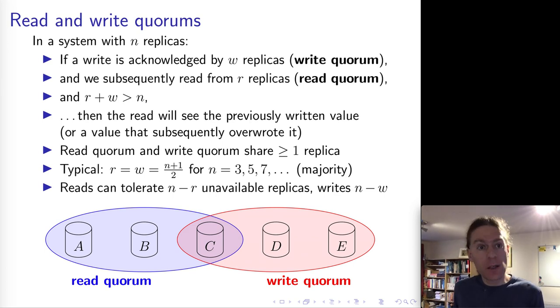One common way of constructing these quorums is what are called majority quorums, where we say that we are going to assume that we have an odd number of nodes. And as long as the read quorum and write quorum are strictly more than half of the number of nodes, then it's fine. So that means we require two out of three, we require three out of five, four out of seven, and so on.